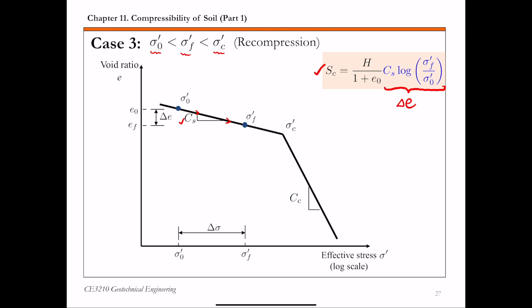There is also a special case where the final effective stress sigma F prime is smaller than the initial effective stress sigma naught prime. This is the case when you unload the clay layer, so the effective stress actually reduces. For this special case, clay follows the shallower slope with modulus C sub S. The equation used to calculate the settlement — in this case it's actually heave or rebound — is the same as case three. You use the same expression, but you get a negative SC value for unloading, because clay is going to rebound or heave due to the unloading process.